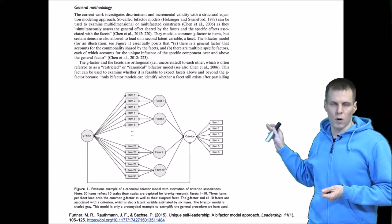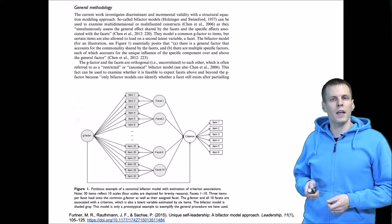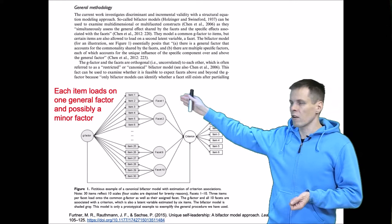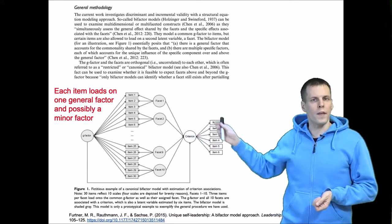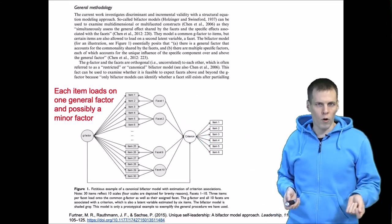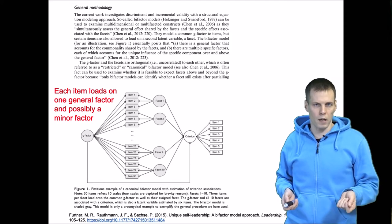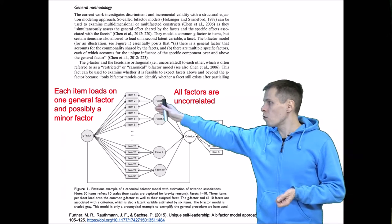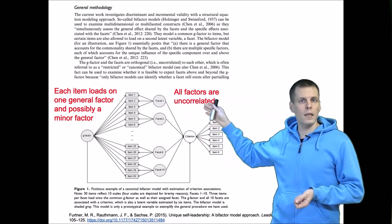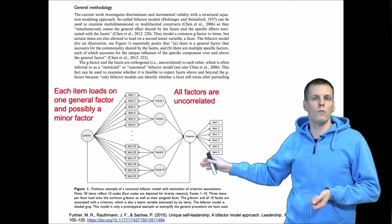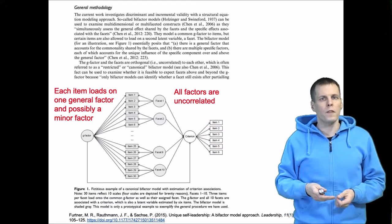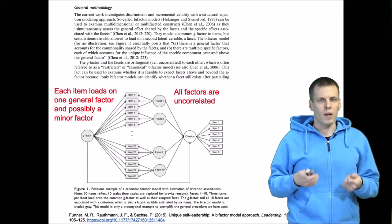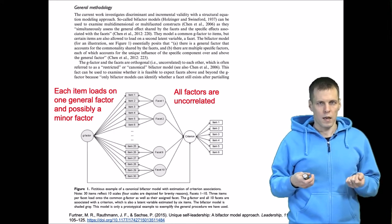Here's the path diagram of a bifactor model. The idea is that you have one main factor called the general factor or g-factor, and then you have one or more minor factors on which the indicators load. It's called a bifactor model because each indicator loads on two factors, and these factors are constrained to be uncorrelated. If they are modeled to be correlated, there is a very high chance the model is not identified.